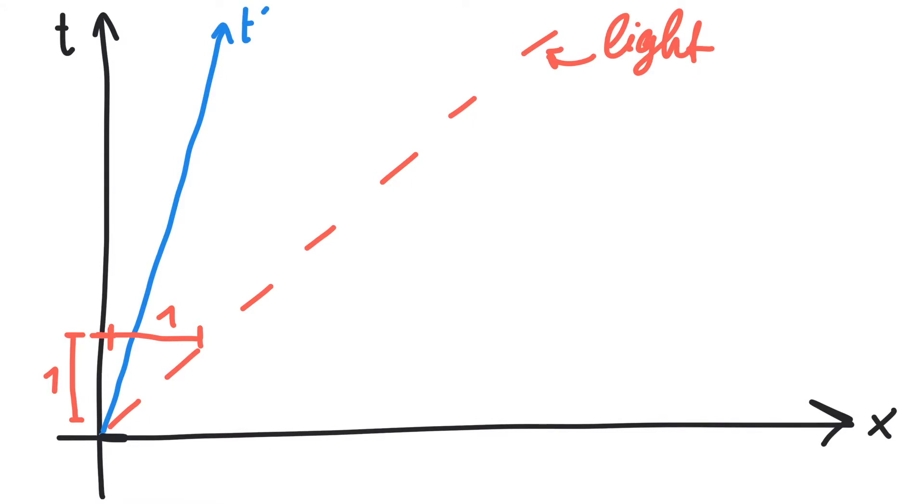According to Einstein, this should also be true for the guy in the plane. So we mark somewhere on the T' axis and know that this distance is traveled by light in the spatial direction. There you go.